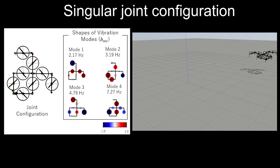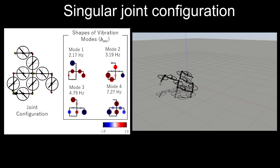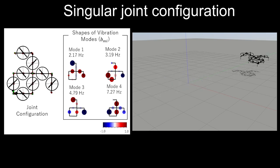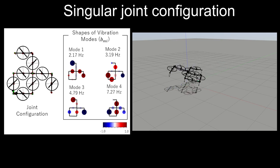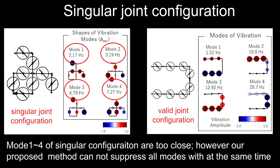However, there are some shapes for which hovering was not possible. This video shows a typical case of such singularity, where the vibration could not be suppressed by our proposed control method. We attribute this to the little difference between the frequencies of the vibration modes from mode 1 to mode 4.